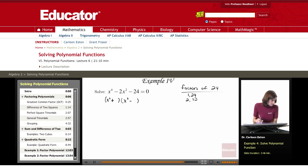2 and 12, 3 and 8, 4 and 6. Now this is a lot, but I don't have to work with all of these. I want to find ones that are close together because their sum is just going to be negative 2.